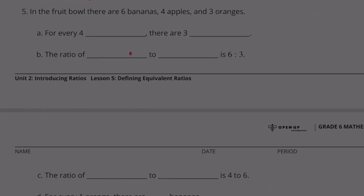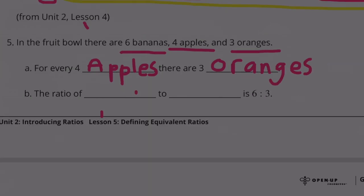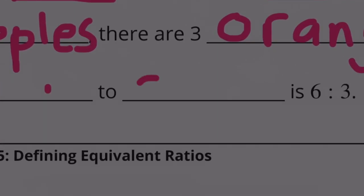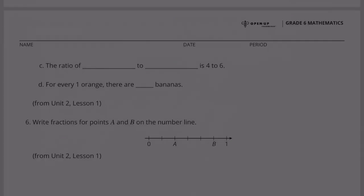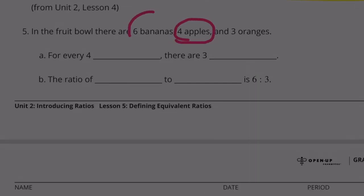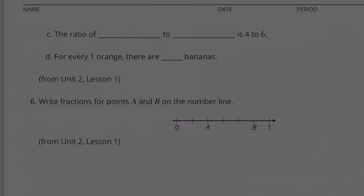Number 5: In the fruit bowl, there are 6 bananas, 4 apples, and 3 oranges. For every 4 apples, there are 3 oranges. The ratio of bananas to oranges is 6 to 3. The ratio of blank to blank is 4 to 6. There are 4 apples to 6 bananas. The ratio of apples to bananas is 4 to 6.